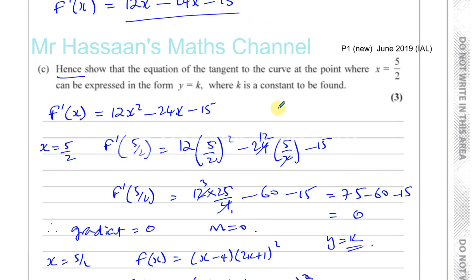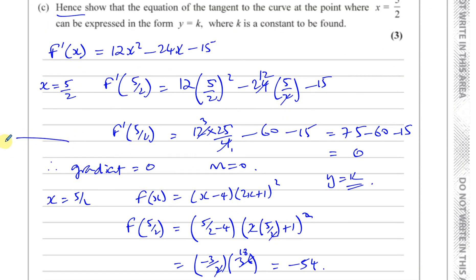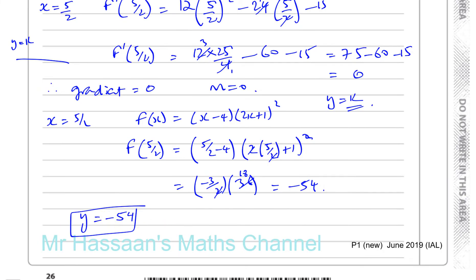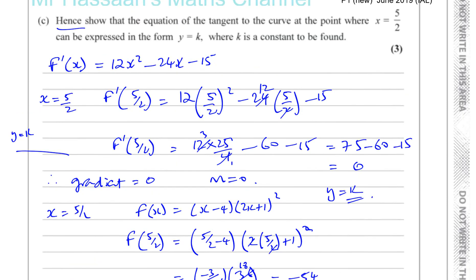We could have found the values of x where the gradient equals 0 by factorizing, but this approach achieves the same result — we substituted x equals 5 over 2 into the gradient function, confirmed it gives 0, so the tangent is horizontal, then substituted into the original function to find y equals minus 54. So k equals minus 54.